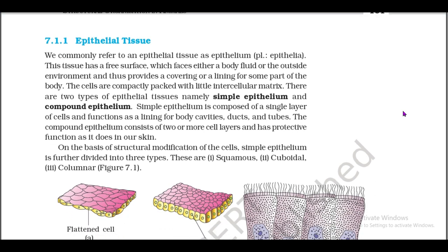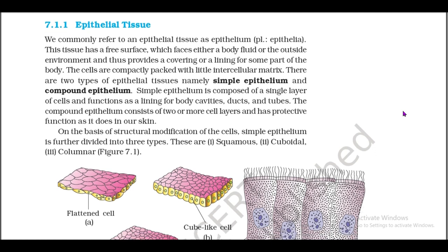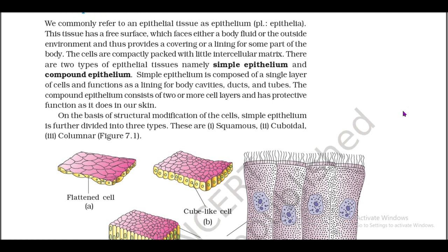We commonly refer to epithelial tissues as epithelium (plural: epithelia). This tissue has a free surface which faces either a body fluid or the outside environment, and thus provides a covering or a lining for some part of the body. The cells are compactly packed with little intercellular matrix. There are two types of epithelial tissues: simple epithelium and compound epithelium.